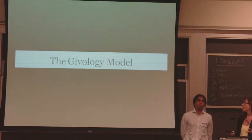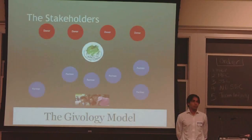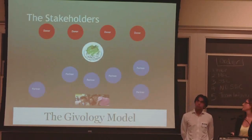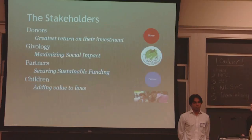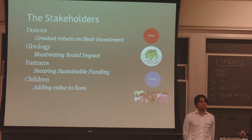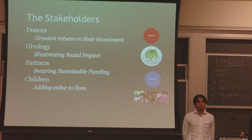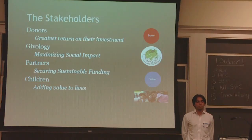We see the immunology model in three different areas. The first are the stakeholders — there are four: donors, the immunology portal itself, partner organizations, and the children. Each of these has a continued interest within immunology. Donors are looking to increase return on their investment. Immunology is looking to maximize social impact. Partners are hoping to secure sustainable funding, and the children are hoping to add value to their lives.